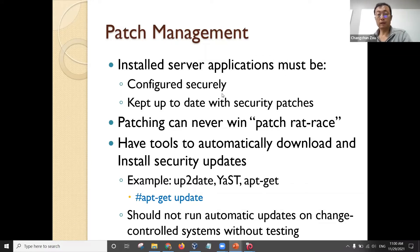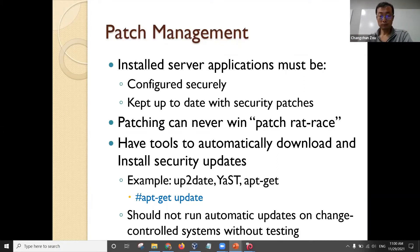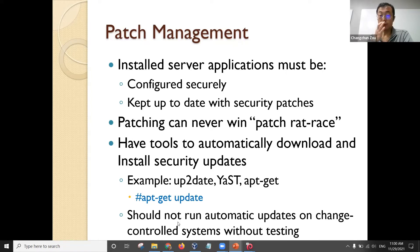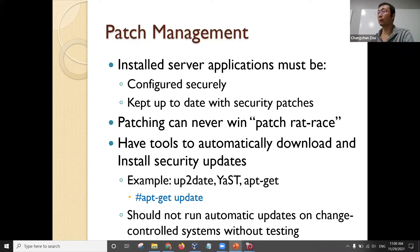This slide basically shows that for patch management, there are tools to automatically download and install security patches. In Linux, you can use apt-get update to update according to the app repository. Whenever the repository has new updated software, apt-get update will get the update patch or software to install. But there is a principle that you should not run automatic updates on mission-critical systems, because some patches could make your enterprise software unusable. So you have to test the security patch or update first, and when you confirm it won't affect your company's own software system, then you do the update.